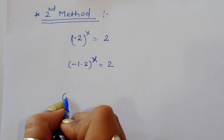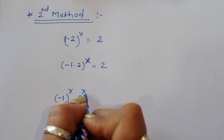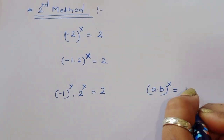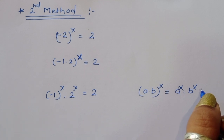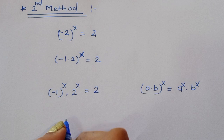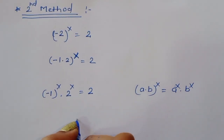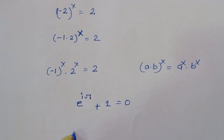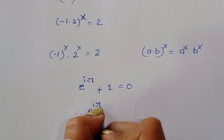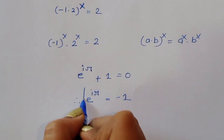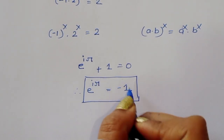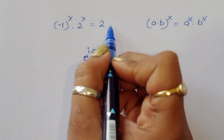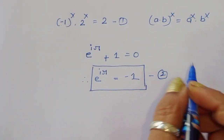We use the formula (a·b)^x = a^x · b^x. According to Euler's identity, e^(iπ) + 1 = 0, therefore e^(iπ) = -1. We substitute this value in place of -1. So (e^(iπ))^x × 2^x = 2. Call this equation 1, and e^(iπ) = -1 as equation 2. We now substitute equation 2 into equation 1.